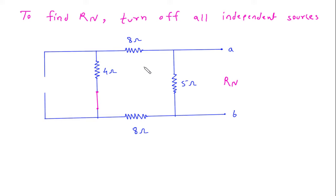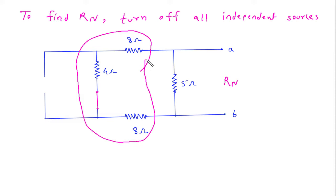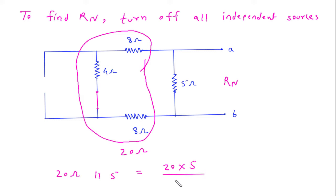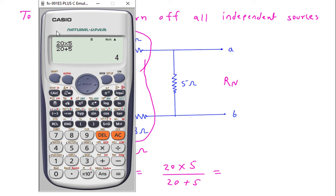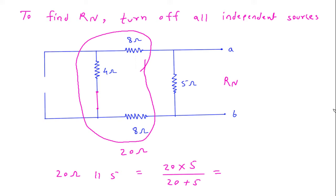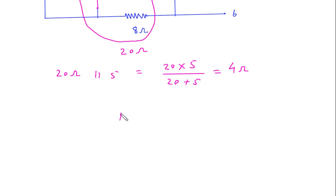Now as we can see that 8 Ohm, 4 Ohm and 8 Ohm are in series, so this will be 20 Ohm. Now this 20 Ohm parallel with 5 Ohm, so this will be 20 into 5 by 20 plus 5. So this will be 4 Ohm, therefore Rn is equal to 4 Ohm.